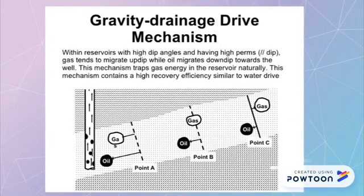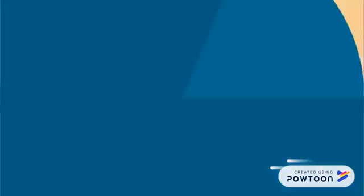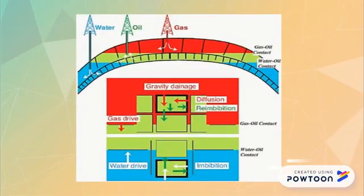Conditions conducive to gravity drainage include thick reservoir with high vertical permeabilities or thin reservoir with steep dips. Gravity drainage can cause released solution gas to migrate upward and oil to flow downward, conserving reservoir energy and increasing recovery to near that of a water drive.